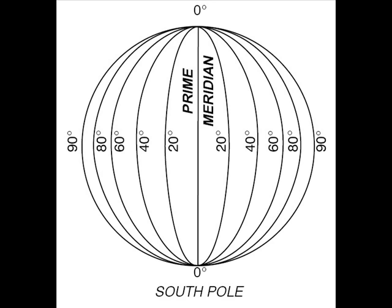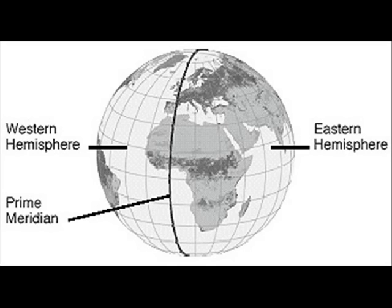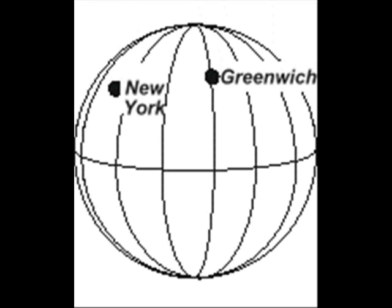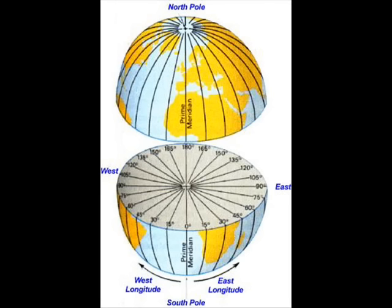Longitude is the angular distance measured in degrees. It tells how far from Greenwich, England, any place happens to be — east or west from Greenwich, England, wherever a place may be. Longitude gives the angular distance scientifically.